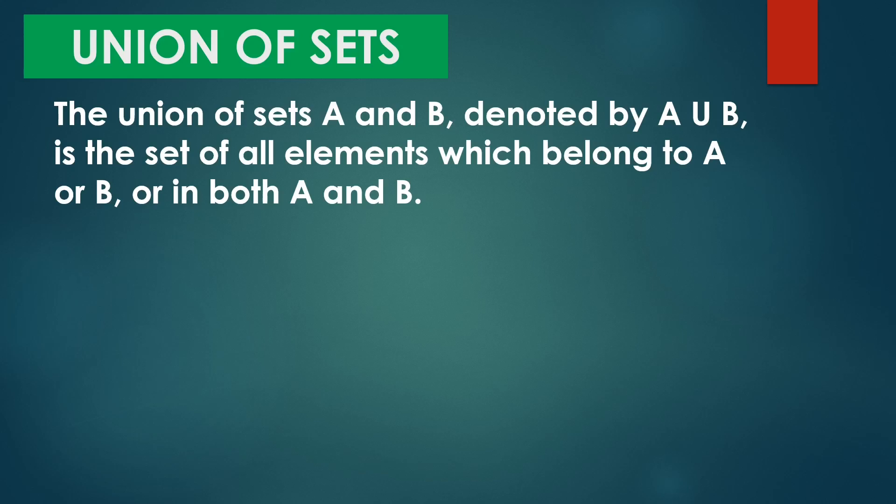Ano naman ang union of sets? The union of sets A and B, denoted by A union B, is the set of all elements which belong to A or B or in both A and B. In other words, pag sinabi natin yung union of sets, combining all the elements of the sets — pagsasamasamahin lang natin sila. So anong symbol natin? U.